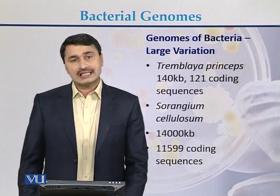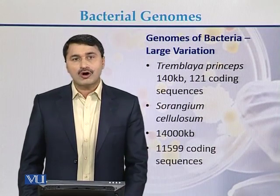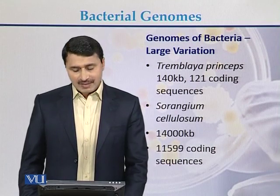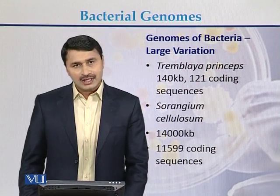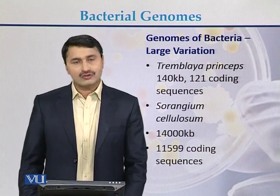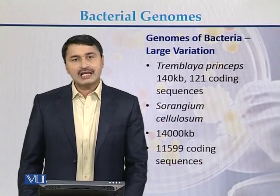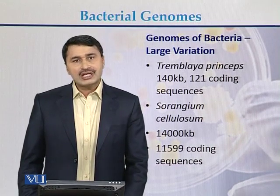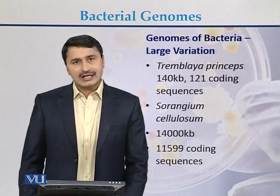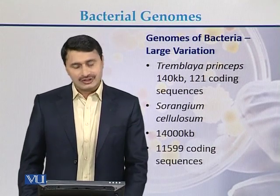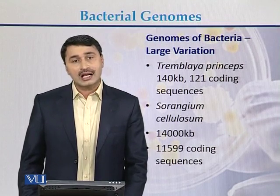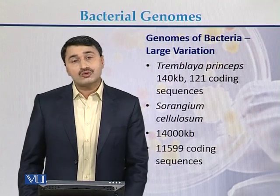So we can see there is a large variation in the genomes of bacteria. On one hand, the genome of one bacterium is 140 KB; on the other hand, the genome of another bacterium is 14,000 KB. Considering the variation in gene numbers: in Tremblaya princeps there are 121 genes, while in Sorangium cellulosum there are approximately 12,000 genes.